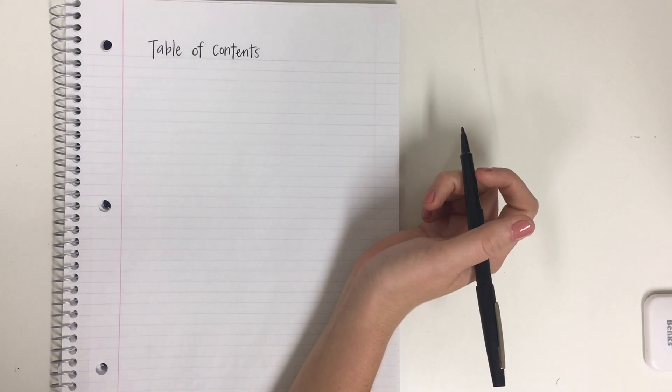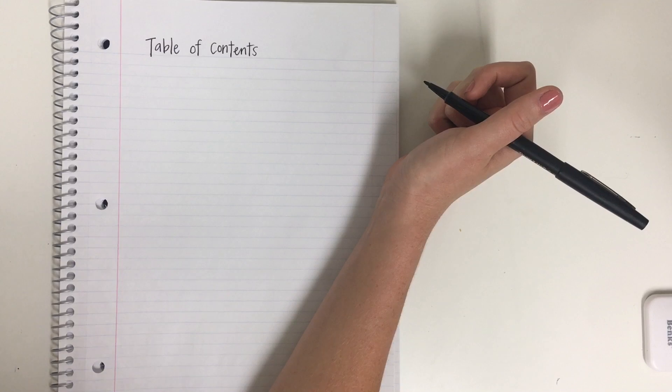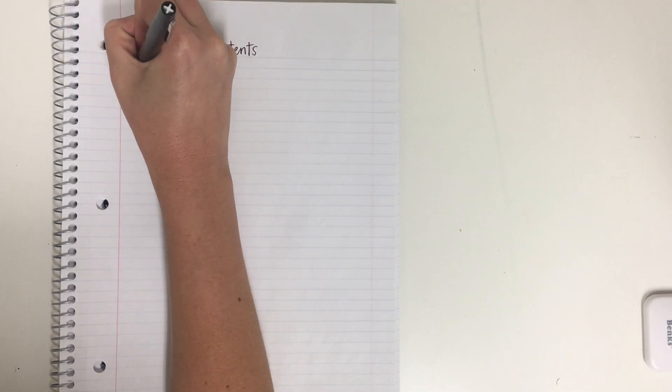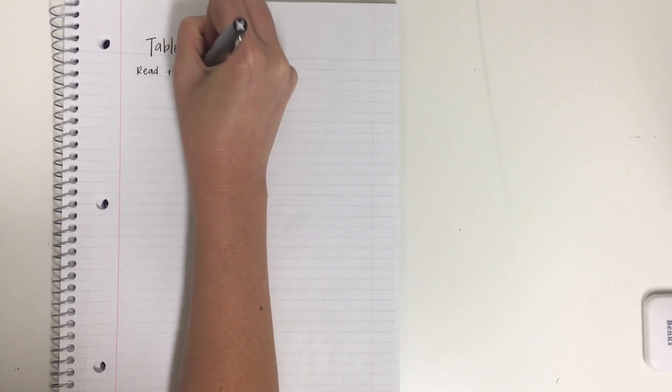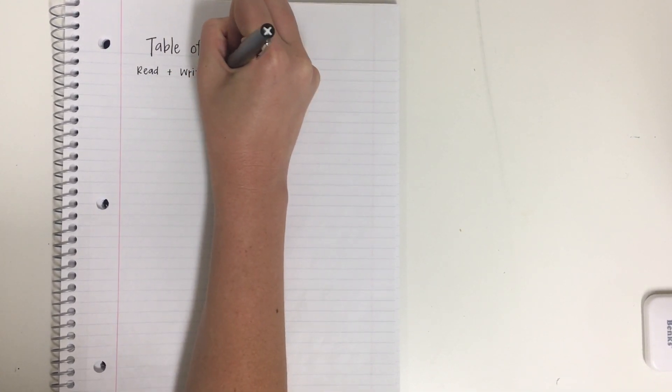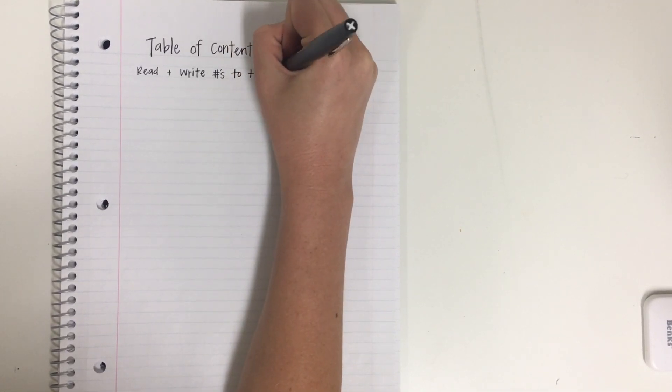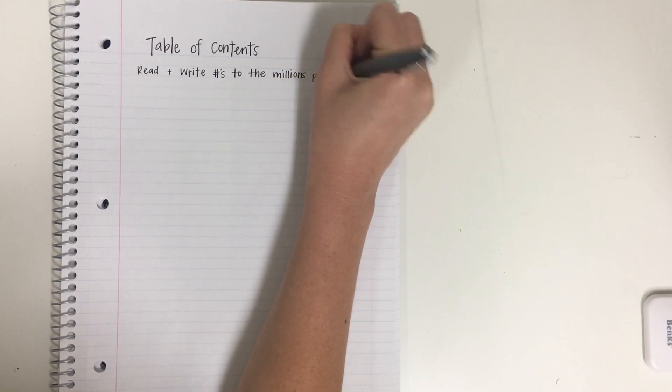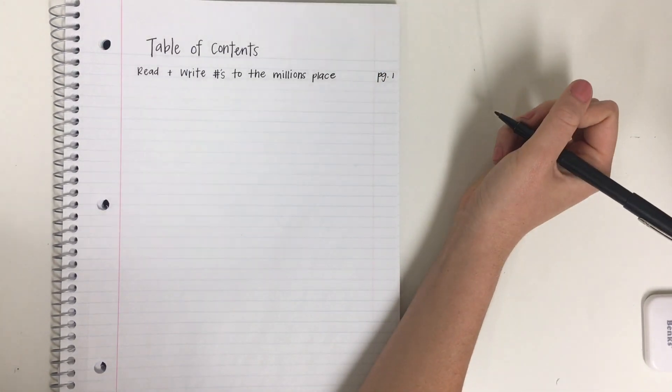Okay class, today we're going to be tackling place value and we're going to learn and kind of refresh our brains on how we read and write numbers in different forms. So in your table of contents, we're going to write, read and write numbers to the millions place. And we are going to start on page one and we'll see how far we go.